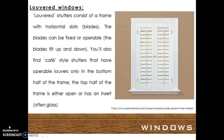Louvered window shutters consist of a frame with horizontal slats or blades. The blades can be fixed or operable — they tilt up and down. You will also find cafe style shutters that have operable louvers only in the bottom half of the frame. The top half of the frame is either open or has an insert of open glass.